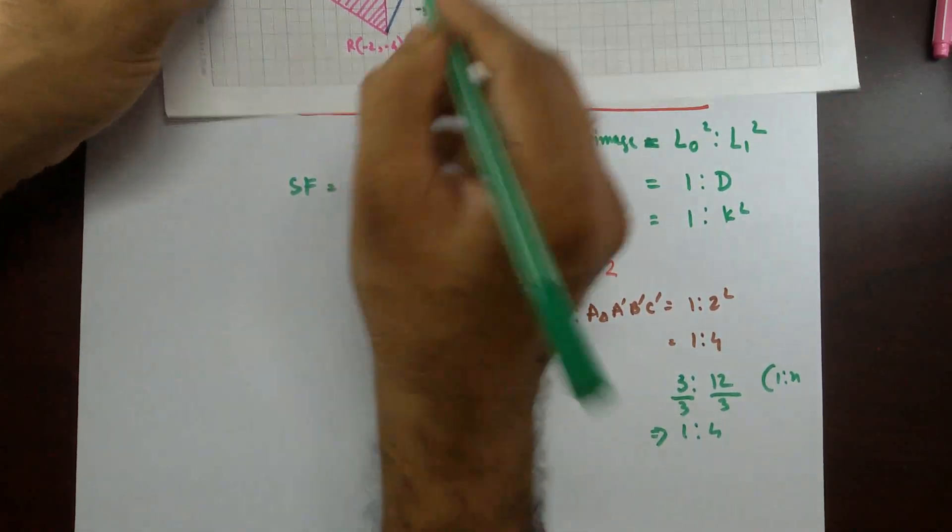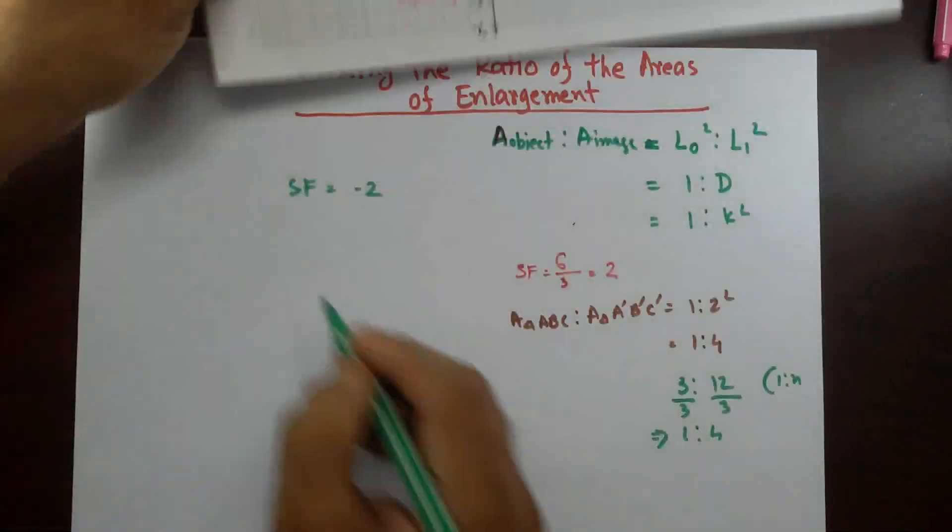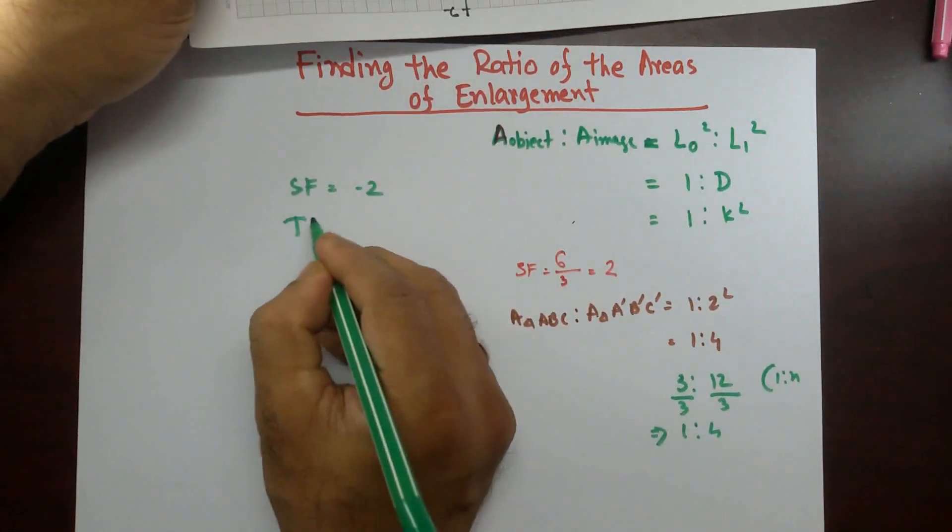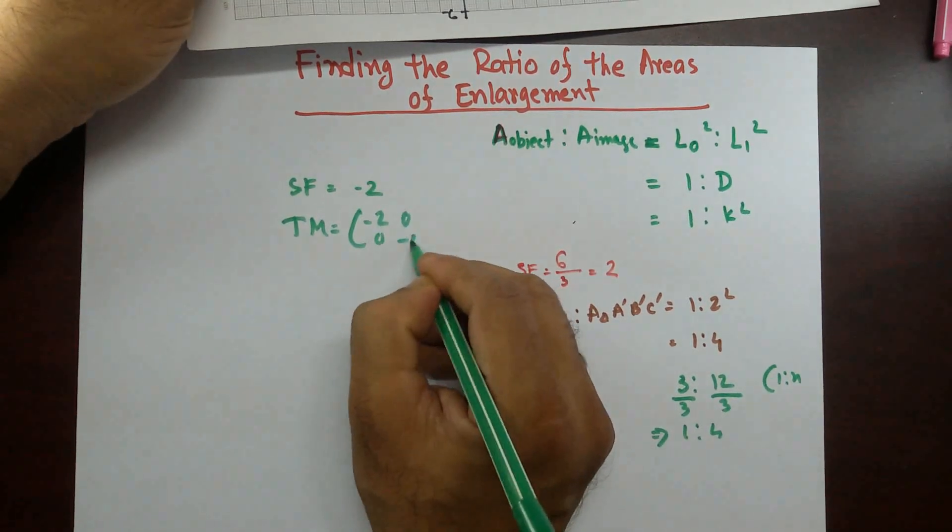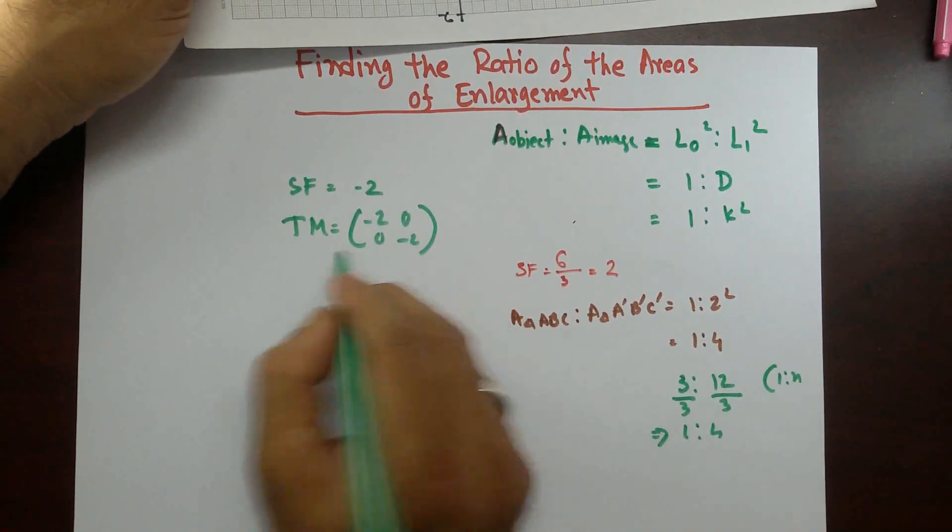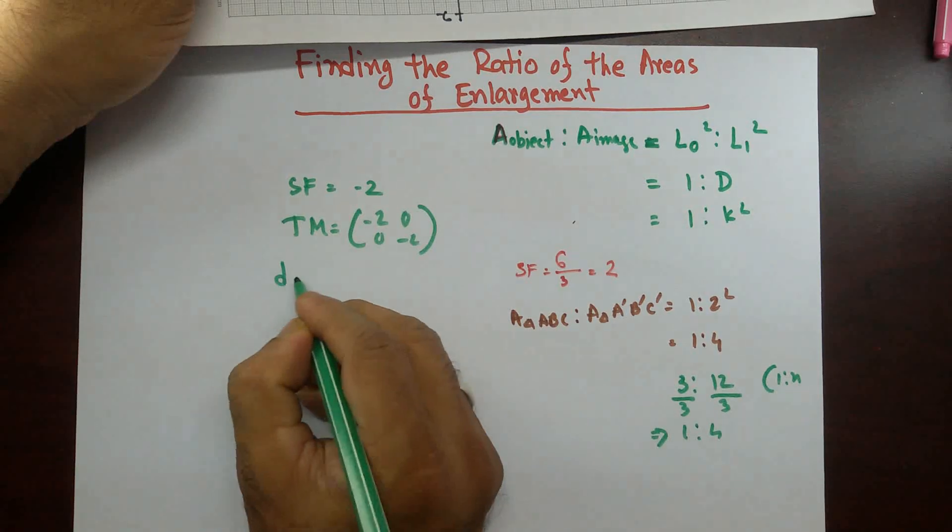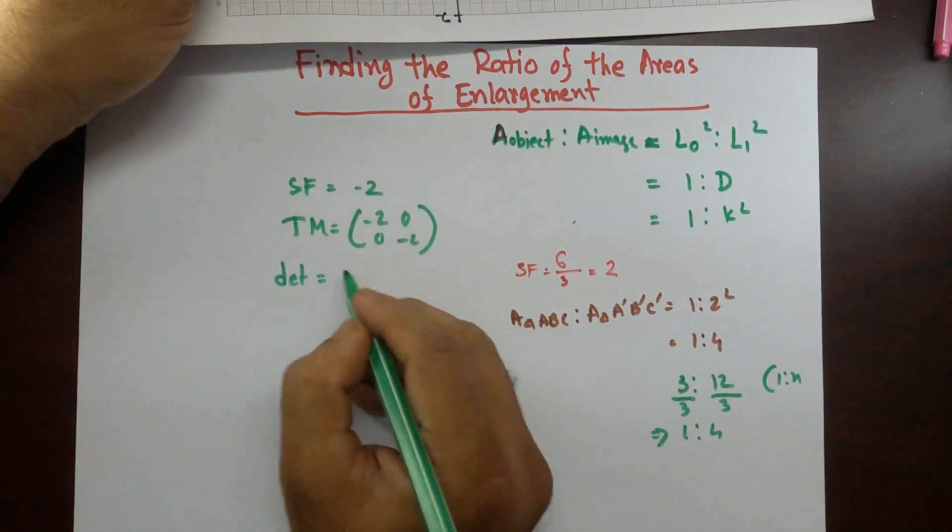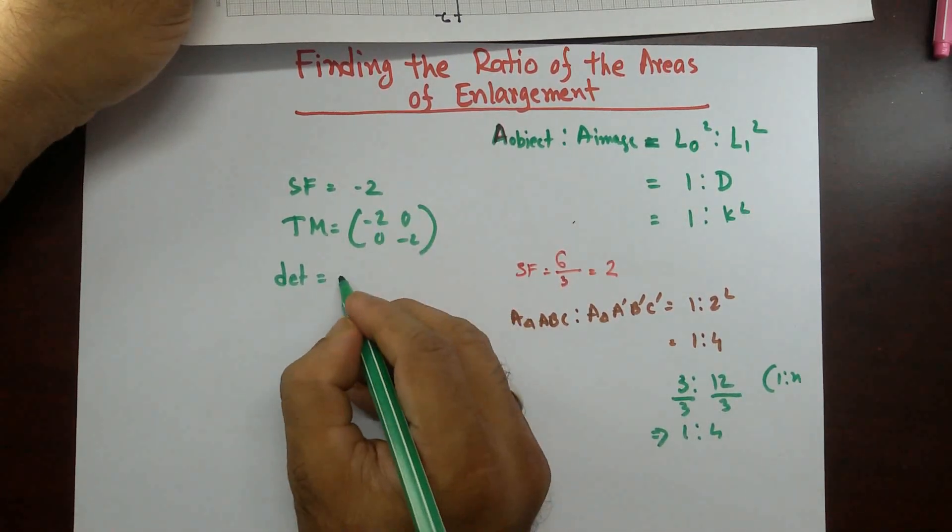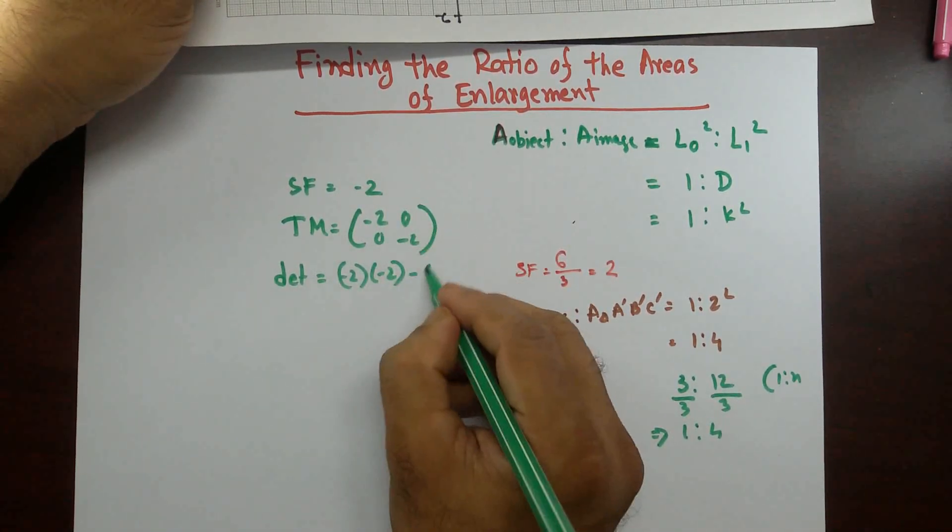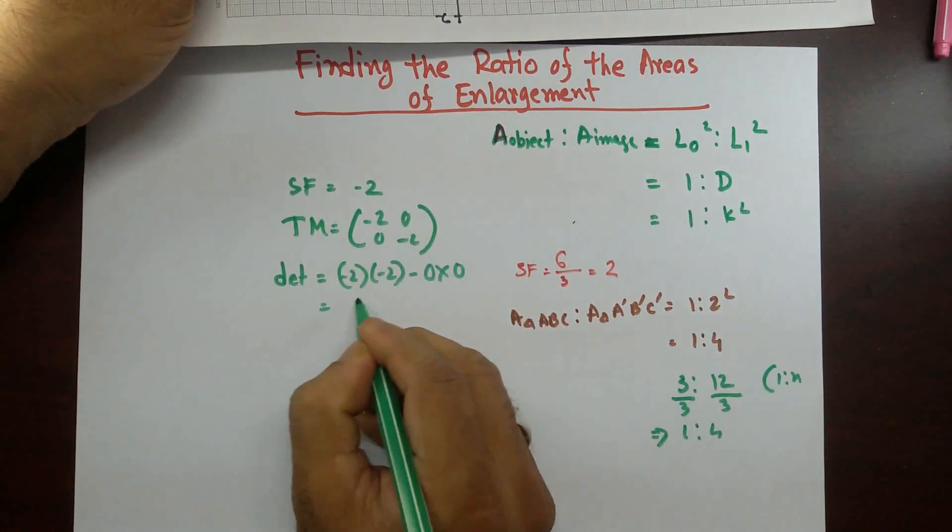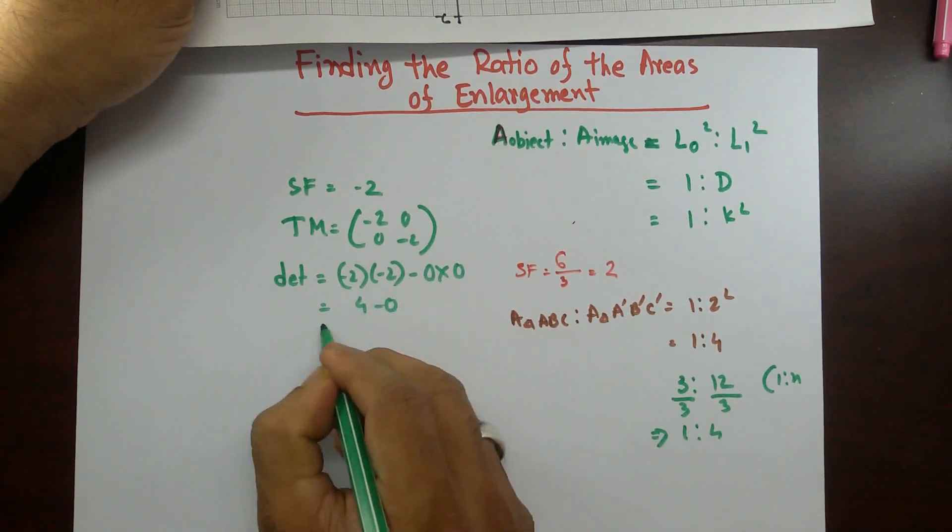Since it's going through the origin, then the transformational matrix would be minus 2, 0, 0, minus 2. And those students who know the matrix, you know the determinant. Determinant is this times that minus 2 times minus 2, then minus 0 times 0. So it's going to be 4 minus 0 equal to 4.